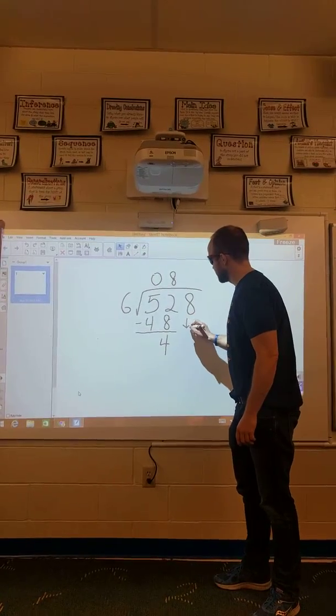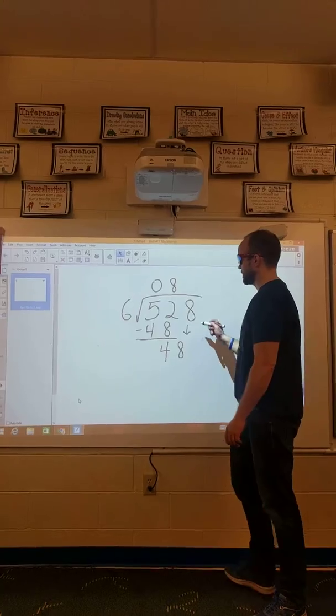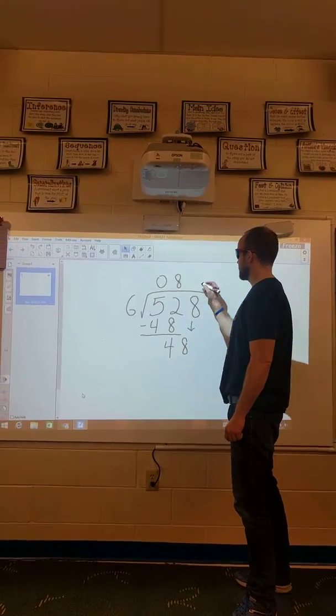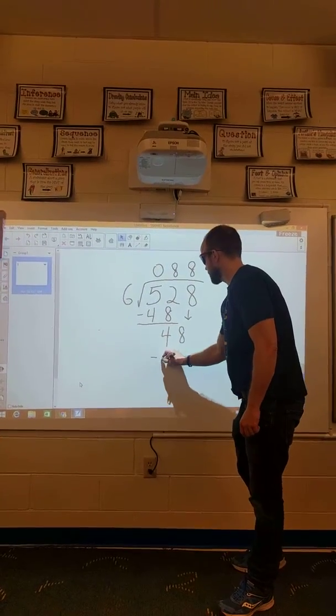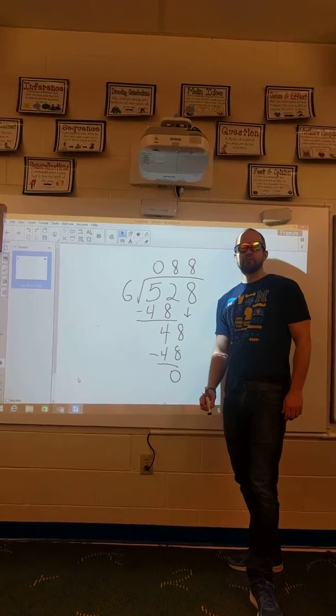So now I can bring down the 8, which makes this problem actually fairly easy because it's the same multiplication problem again. How many times does 6 go into 48? Oh, I already did that. 8 times. 8 times 6 is 48. And that's going to leave me 0 as my remainder.